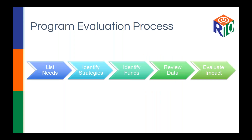There is not a specific required way to evaluate. This is one method the agency shared previously under No Child Left Behind — it's a very generic process and gets the job done. You can use it or choose not to. This five-step process starts off with listing your needs, identifying your strategies, identifying the funds, reviewing the data, and lastly, evaluating your impact.